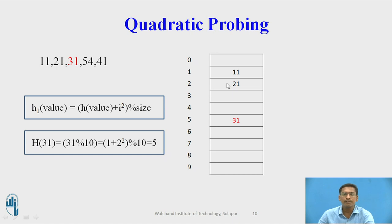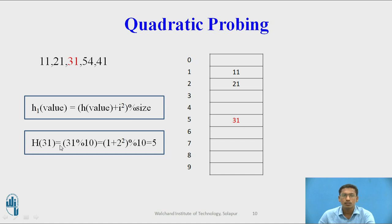Next element is 31. Initially, 31 mod 10 = 1, but index 1 is already full, so I use quadratic probing. Hash key of 31 = (1 + 2²) mod 10 = (1 + 4) mod 10 = 5. So 31 will be inserted at index 5.